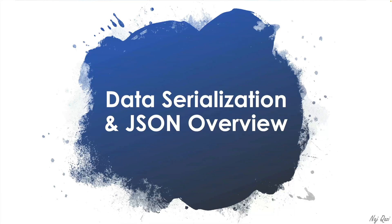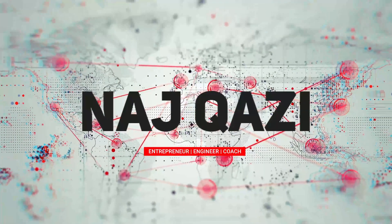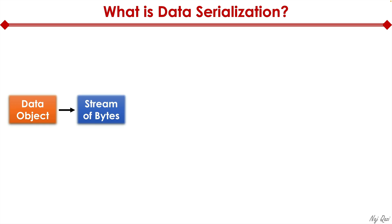Now let's shift our attention to data serialization. I'm also going to provide a quick overview of JSON. So what is data serialization? We have a data object — typically that's complex data — and the idea of data serialization is we want to take that data object that we have stored on our computer and convert it into a stream of bytes.